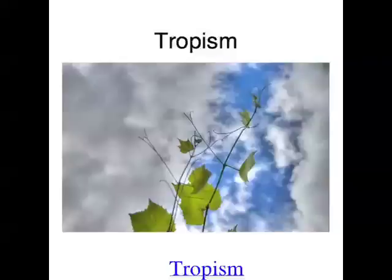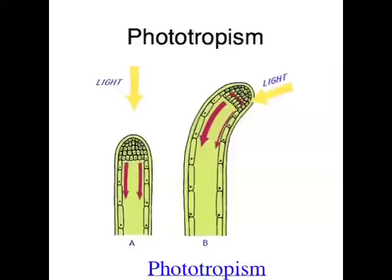The first example is phototropism, and that's when plants grow in response to light. 'Photo' is light, and 'tropism' is growth in response to. There's positive phototropism, which is when a plant grows towards the light, and in fact, normally plants show positive phototropism.